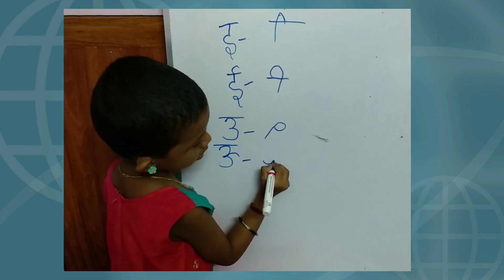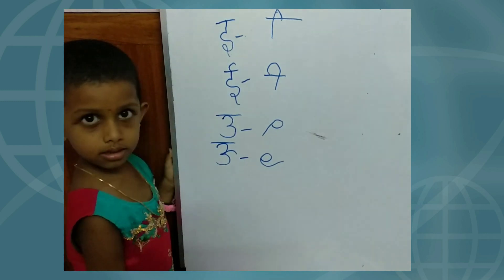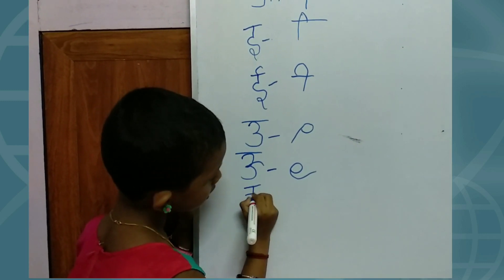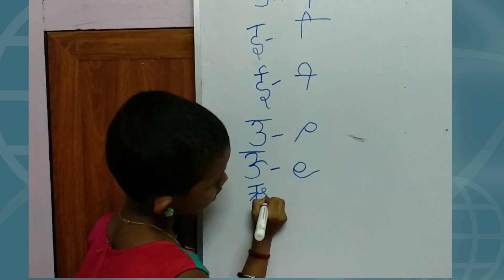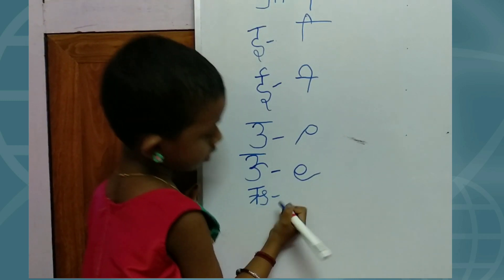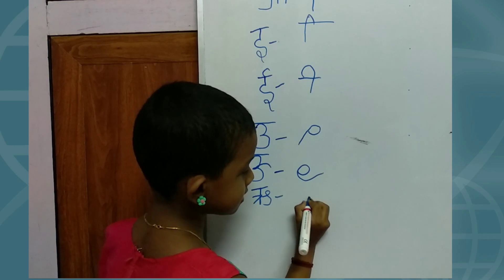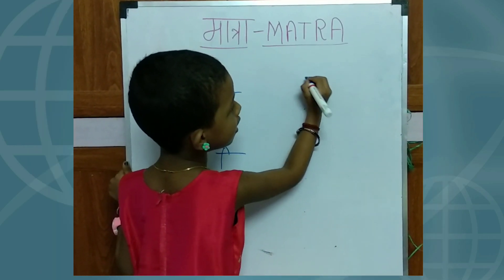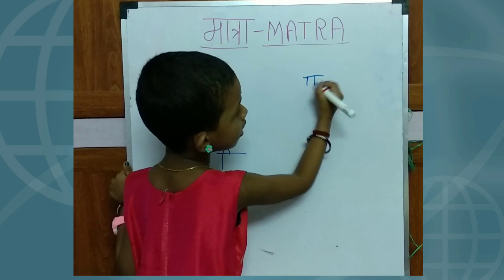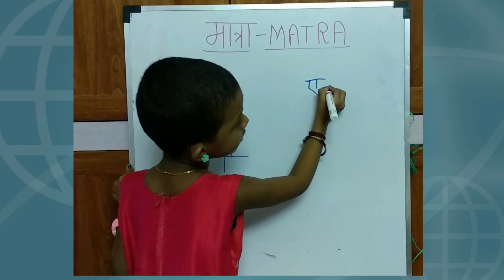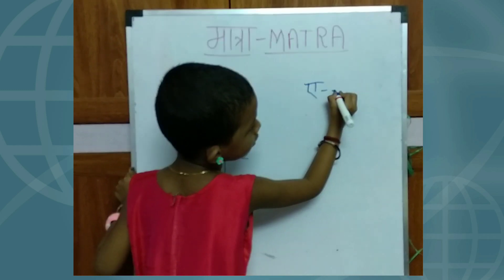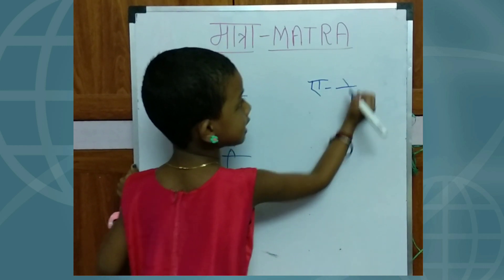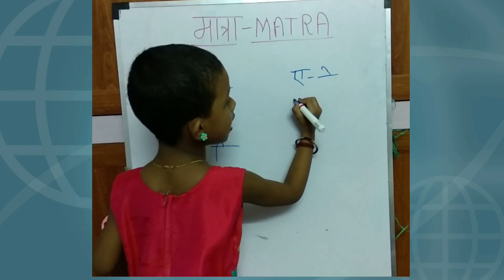Circle towards right — Kru ki matra. C shape — Ye ki matra. One sleeping line, one slanting line — Ai ki matra.